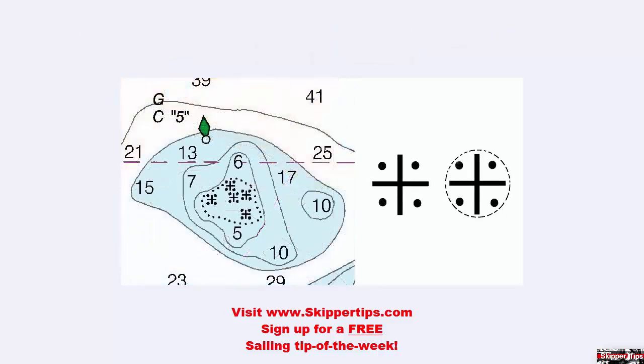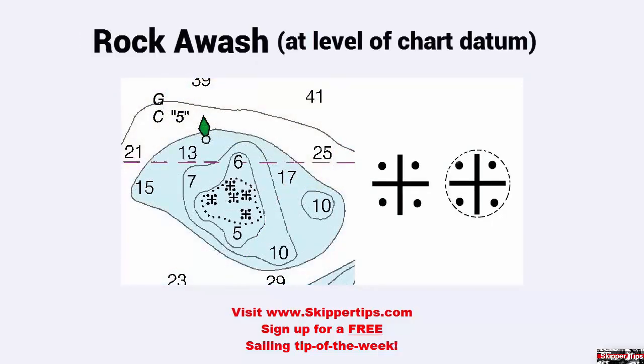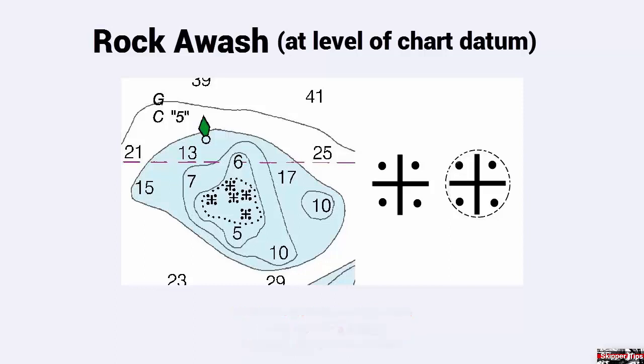The plus sign with dots in all four corners means a rock awash at the level of chart datum. Remember, chart datum refers to depth. Check the low-water datum for your specific chart. Realize that rocks awash are some of the most dangerous in all of navigation. You may or may not see breaking water over a rock awash.